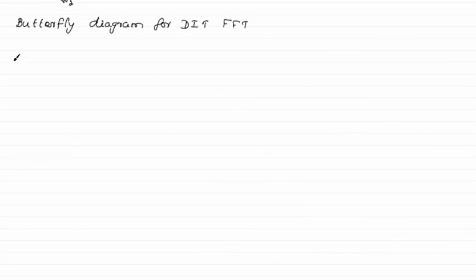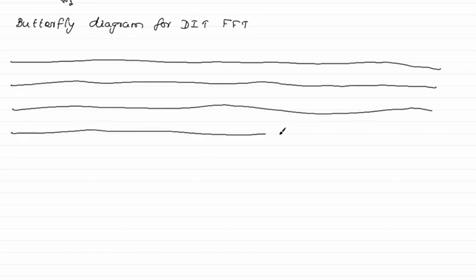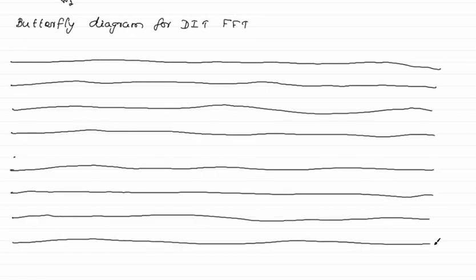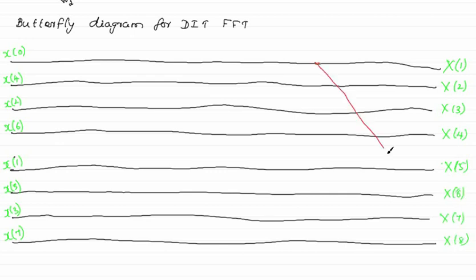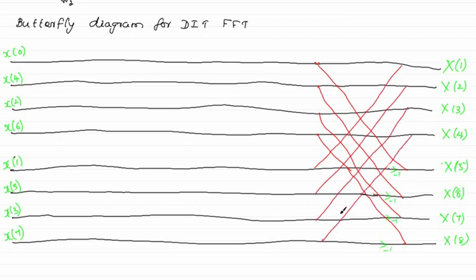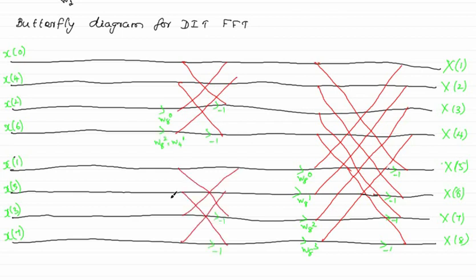Now let us see the overall butterfly diagram for the DIT algorithm. We combine all stages of decimation: the 8-point, 4-point, and 2-point stages. The inputs x[n] are bit-reversed, and the outputs are X[k]. This is the first stage of decimation, followed by the second stage of decimation, and finally the last stage of decimation. This gives us the complete butterfly diagram for an 8-point FFT using the DIT algorithm.